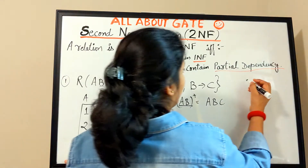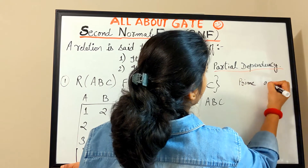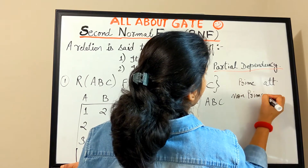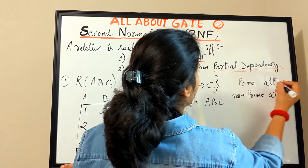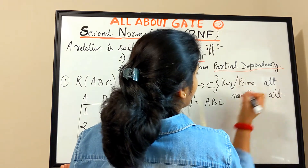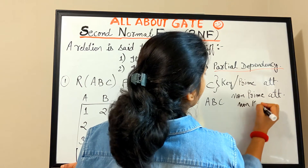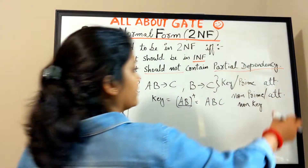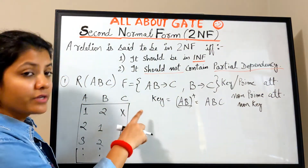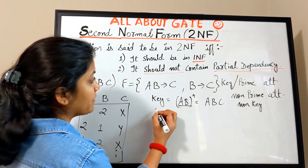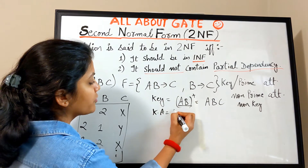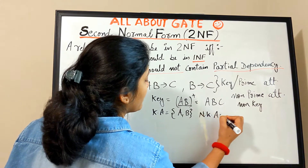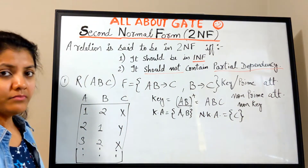So the two terms are: prime attribute, also known as key attribute, and non-prime attribute, also known as non-key attribute. For this relation, the key is AB, so A and B are prime attributes. C is the only non-key attribute, i.e., the non-prime attribute.